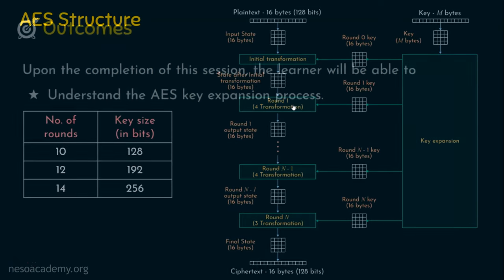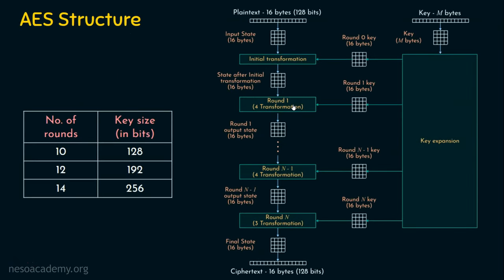We have seen the AES structure in the last few presentations, where the input plaintext is converted into ciphertext using many transformations, and it takes a round key for every round. This is the initial transformation, also referred to as the pre-round, which also requires a round key — referred to as the round zero key. And for all other rounds, we need round keys. How are these round keys generated?